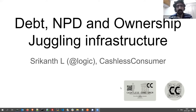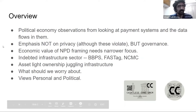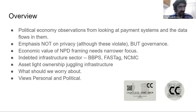What we'll be looking at today is the topic of debt, NPD, and ownership infrastructure. These are essentially political economy observations looking at payment systems and data flows within them. Specifically, we'll be looking at three payment systems: BBPS (bill payment system), FASTag, and National Common Mobility Card. The emphasis here is not on privacy — that's a separate debate with enough literature — but we'll focus on the NPD, the non-personal data aspects.